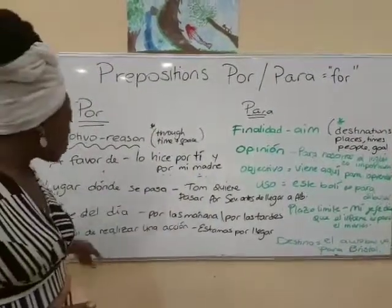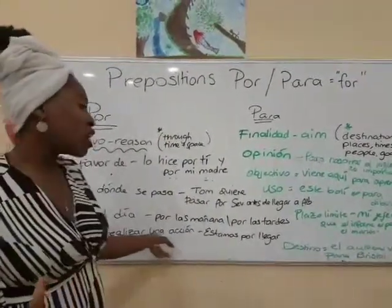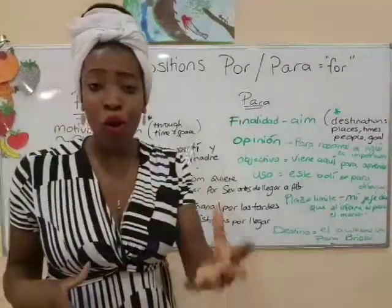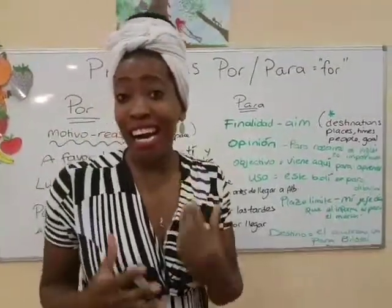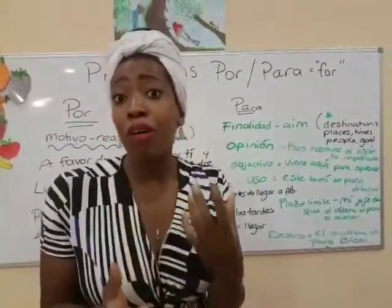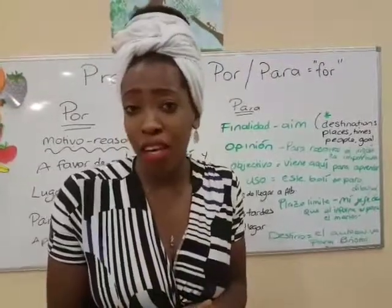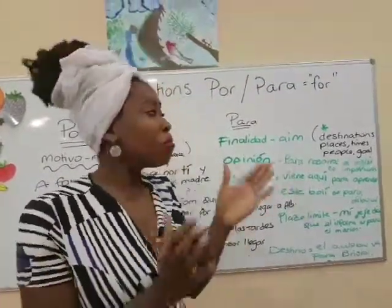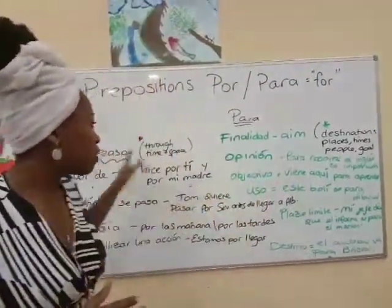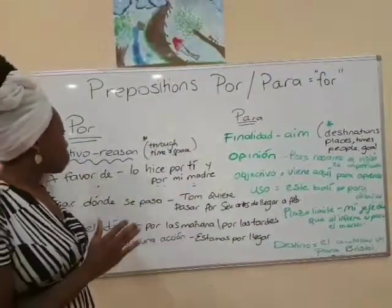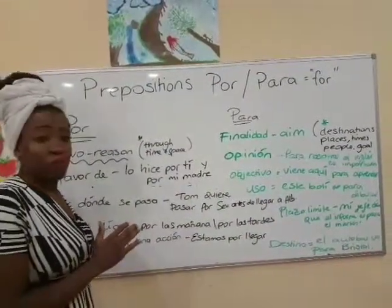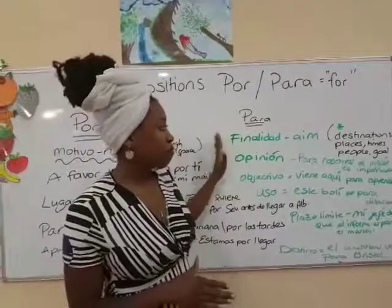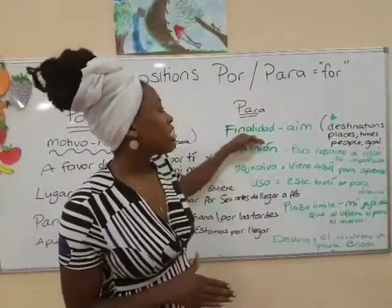And when you are about to do something — 'a punto de realizar una acción' — you use 'por'. For example, 'estamos por llegar' — you're just about to arrive. So that's when you would use 'por'.